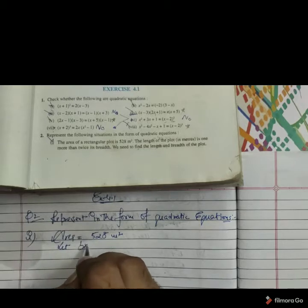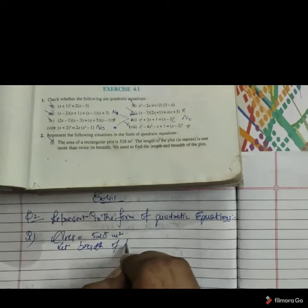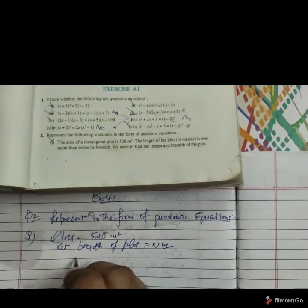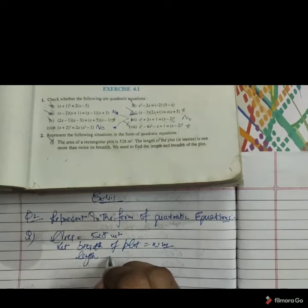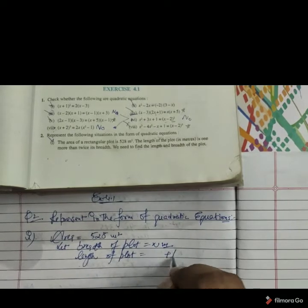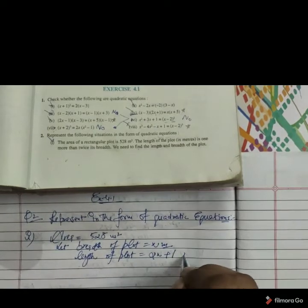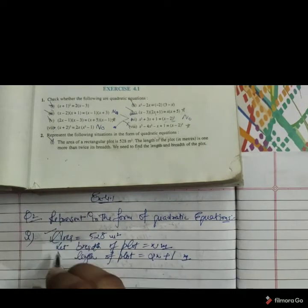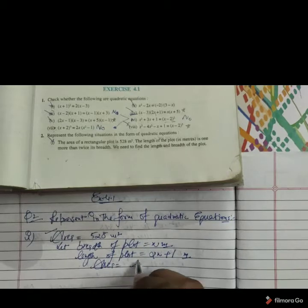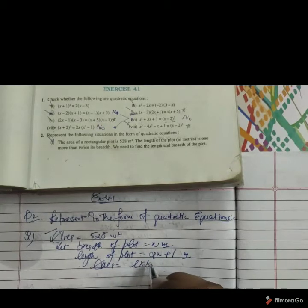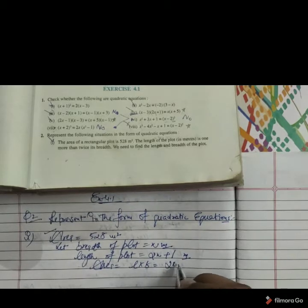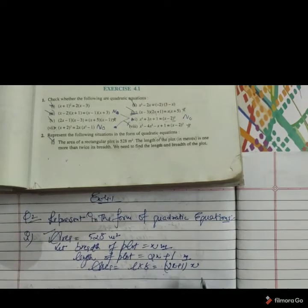So let breadth of plot we assume it x meter. Length of plot as it is given one extra than double of breadth. Now as the data is given area, as you know area of rectangular plot is given by length multiply breadth. So replace the value, length is given by 2x plus 1, breadth is given by x.